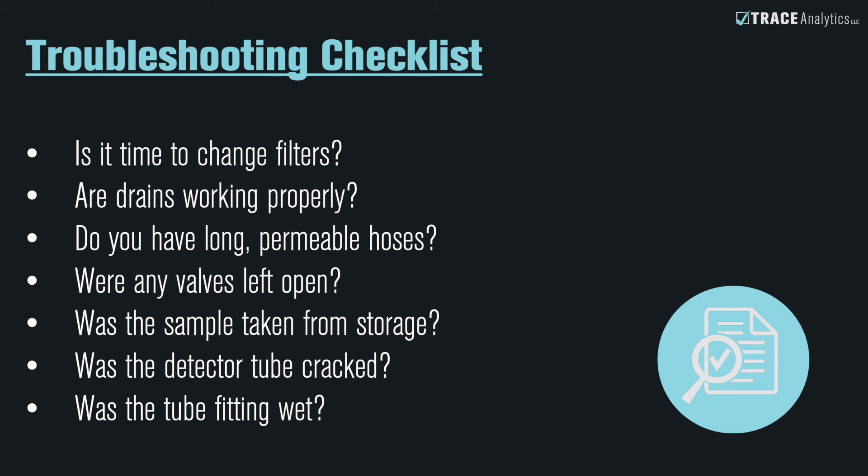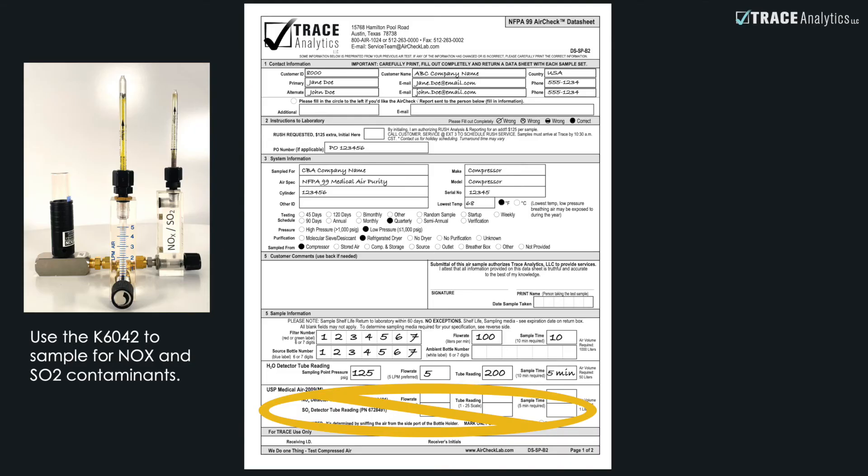If the water vapor sample does not pass, you can take corrective action immediately and then retake the sample. Disregard the NOx and SO2 tube reading section if these were not used. To sample for USP medical air, proceed with the K6042 error check kit.